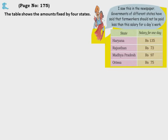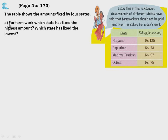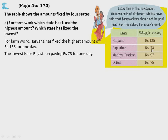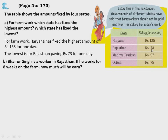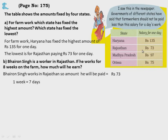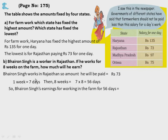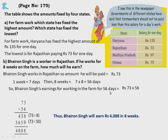The table shows minimum wages fixed by 4 states. The highest amount is ₹135 (Haryana) and the lowest is ₹73 (Rajasthan). Bhairan Singh works in Rajasthan for 8 weeks. 8 weeks = 56 days. He earns ₹73 per day, so 56 into 73 = ₹4,088.